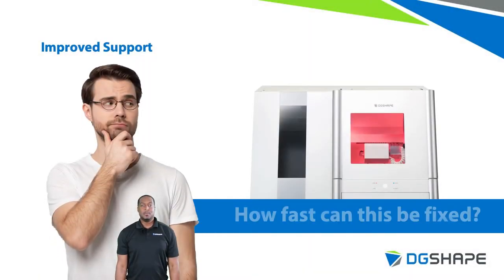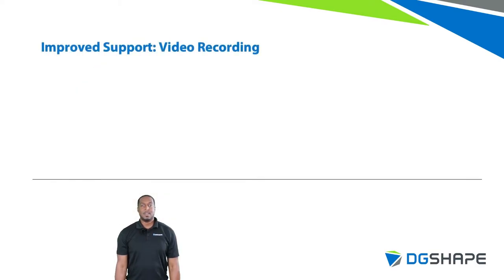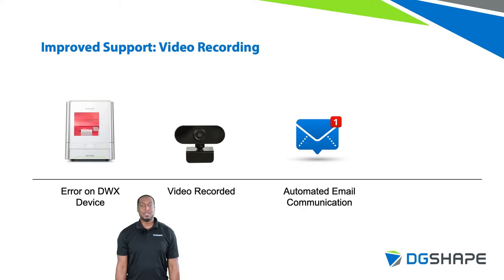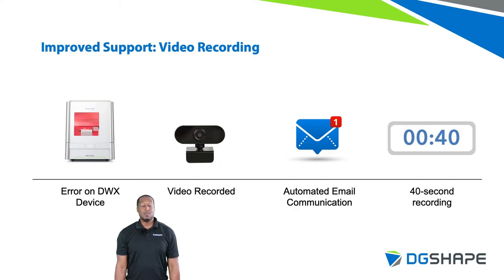When your milling device needs support, what if the problem was clearly understood the first time you reached out for help, without the need of an on-site support technician to evaluate the issue? The new error reporting feature in DW Index 2 aims to do just that. When there is an error on your milling device, a video clip is recorded and exported from an external camera. Then an automated email is sent to the user with a link to the recorded video. The video clip will display milling activity 40 seconds before the error to help determine its cause, helping users and support representatives clearly understand the cause and speed up solutions.